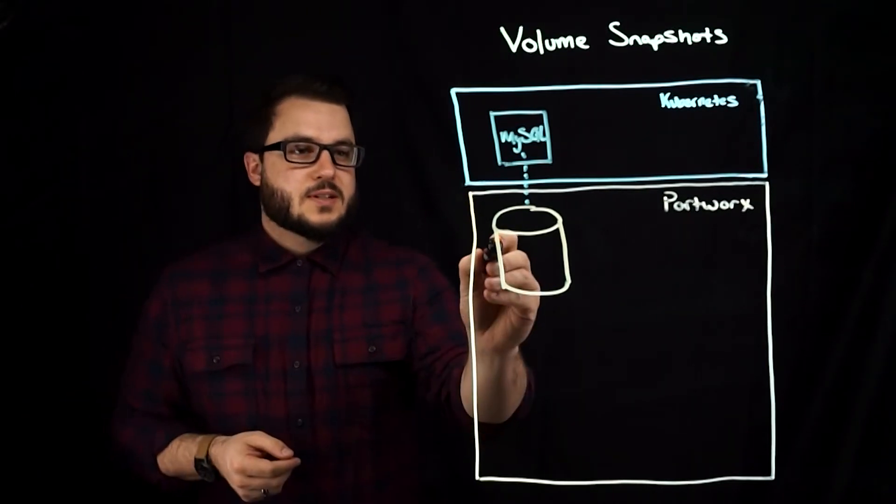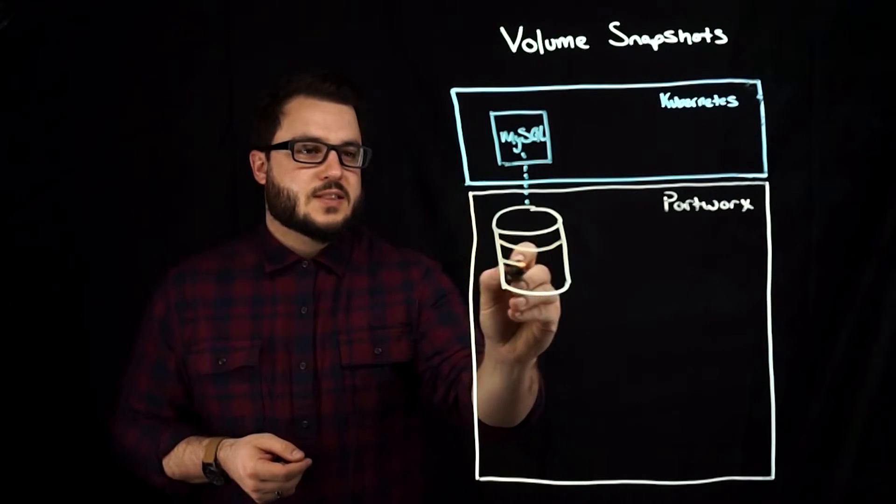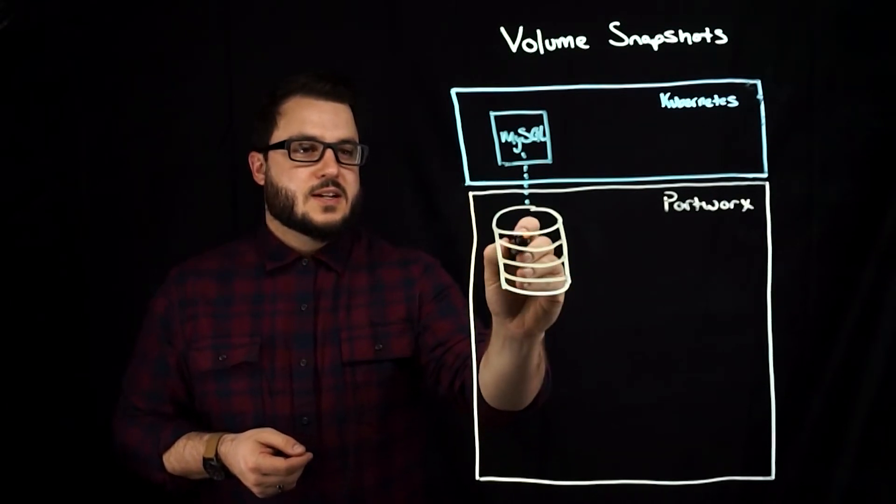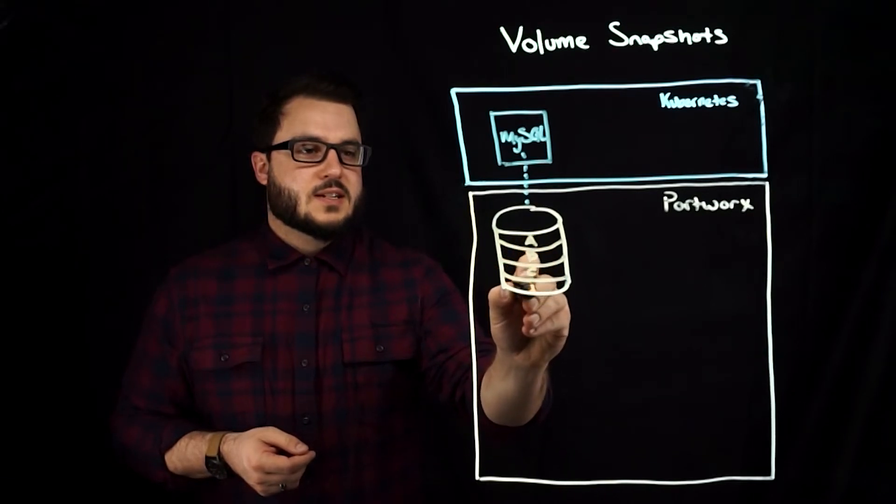Now within that volume, we're going to say that there's a number of different blocks. We're going to say that this is block A, B, C, and D.